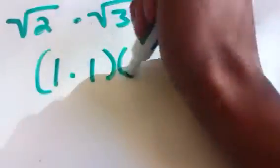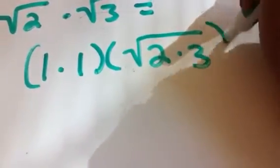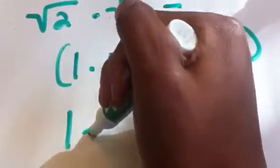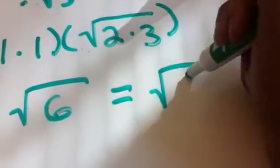Alright, so we've learned how to multiply radicals. Say we have the square root of 2 times the square root of 3. We'll multiply the outside first, so our coefficients are 1 and 1. Then we'll multiply inside the radical, which is 2 times 3. So this is going to be 1 times the square root of 6, which you just write as the square root of 6.